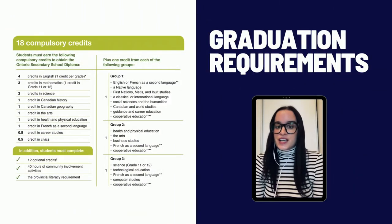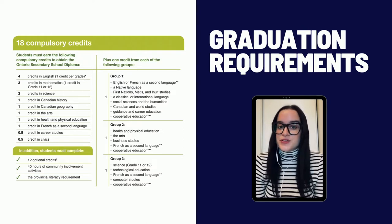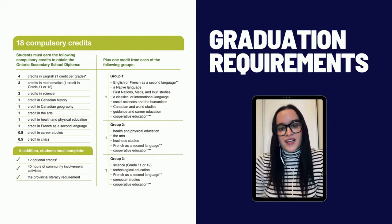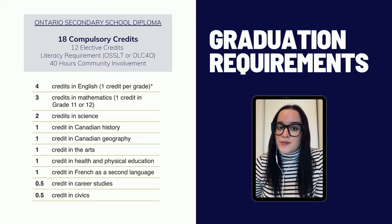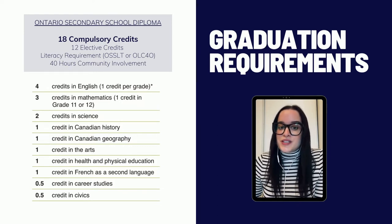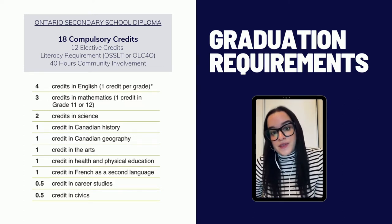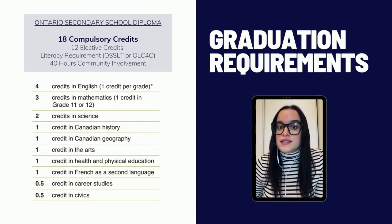In order to understand course selection, we're going to start with the foundation of graduation requirements, so all parents and students understand what is required to achieve the Ontario Secondary School Diploma. There are four main components to achieving the OSSD. The first component is compulsory courses — students must complete 18 compulsory courses in order to achieve their diploma. Fifteen of those 18 courses are listed on screen, stretched from grade 9 to 12.